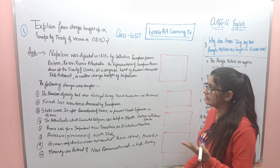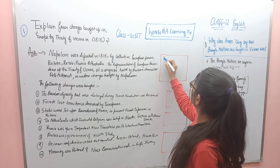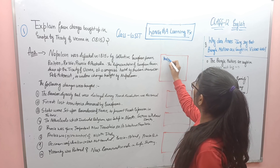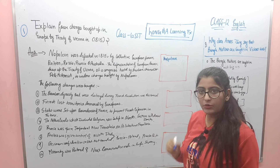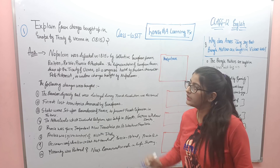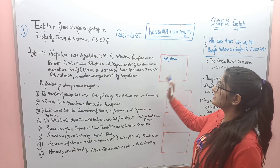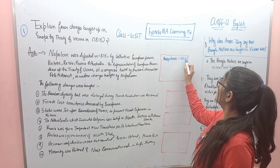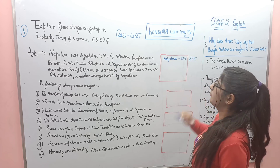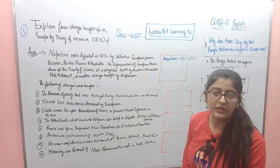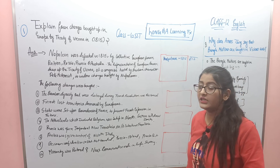Make yourself a question in Hindi: Napoleon was defeated in 1815. After that, collective European power — four countries. You will write 'Napoleon 1815.' You have to write this. You can write it in English: 'Napoleon was defeated in 1815 by four countries.' Which four countries? Britain, Russia, Prussia, Australia.